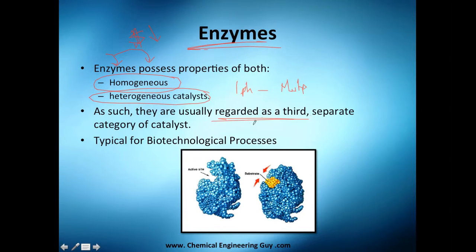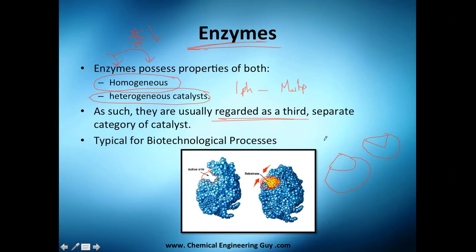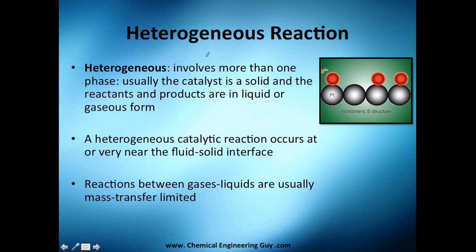As such, enzymes are usually regarded as a third, separate catalyst concept. Look at the active site here — it only accepts a specific shape, like a lock and key. So your reactant A and reactant B each fit that site, come together, and then react. This substrate specificity is what makes enzymes unique.